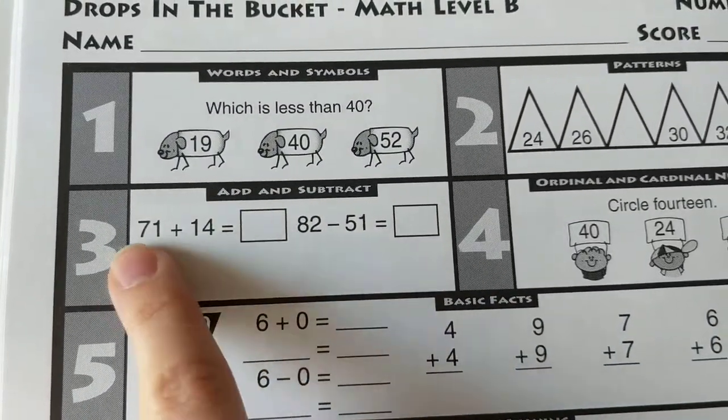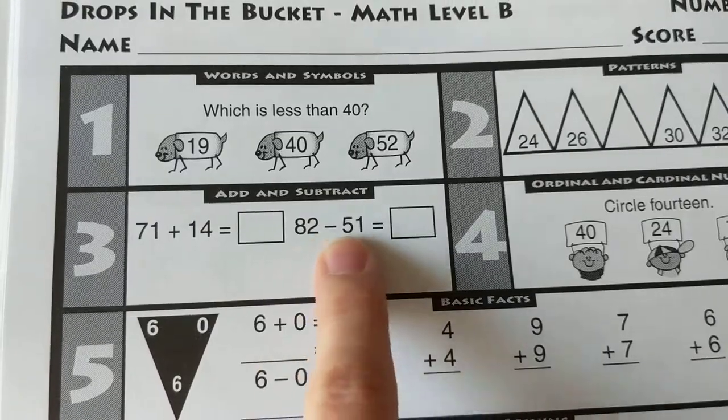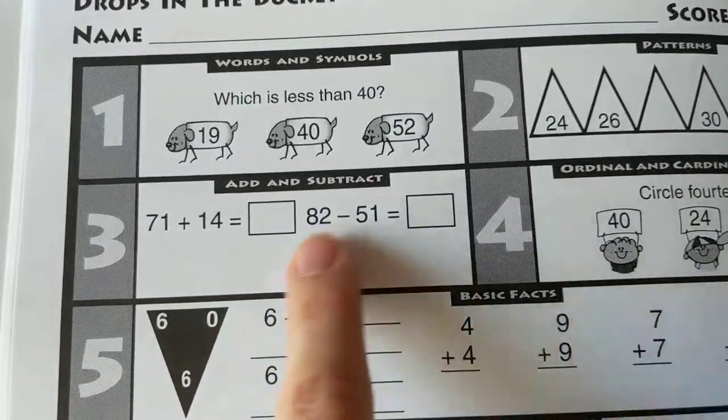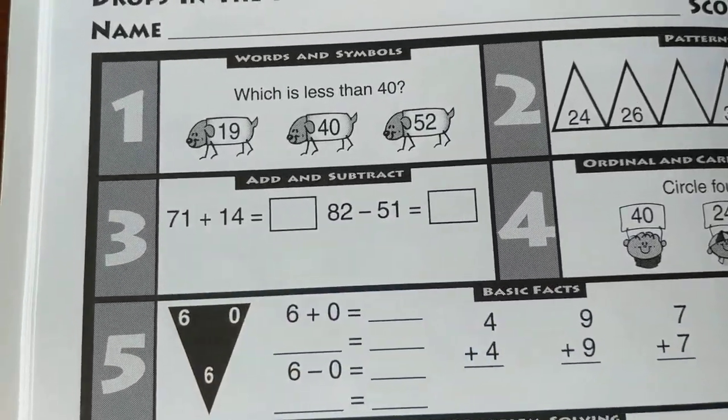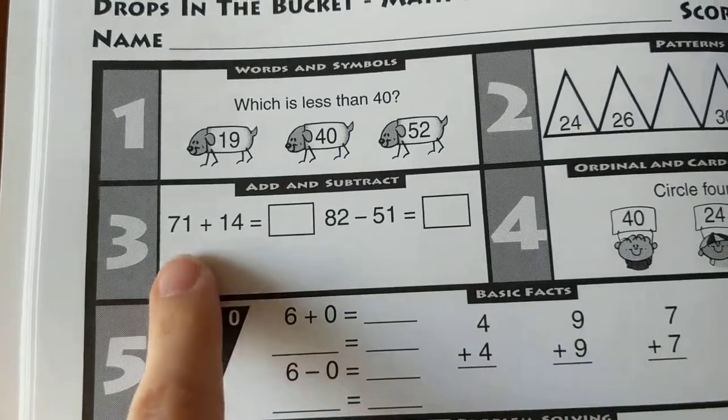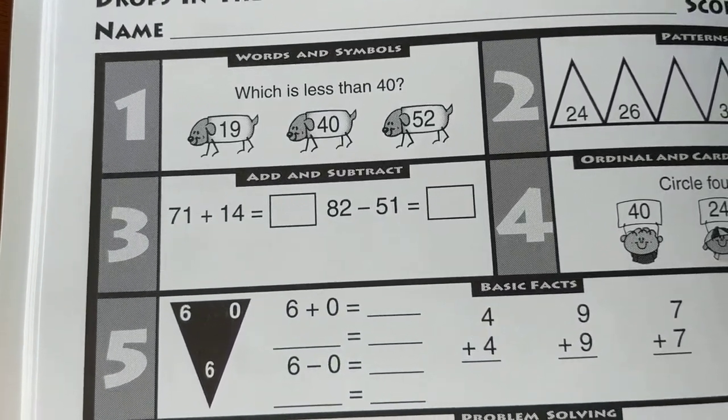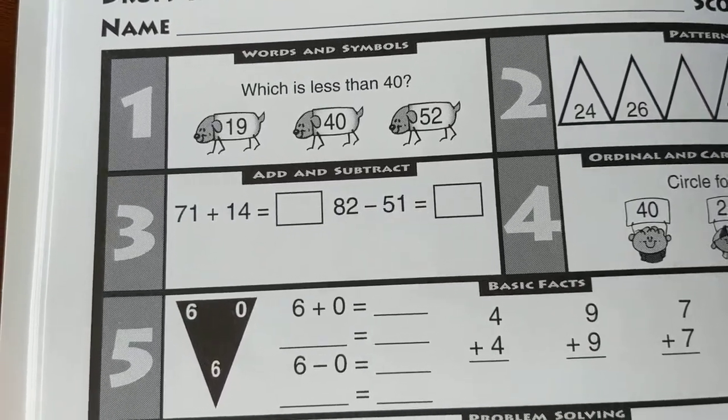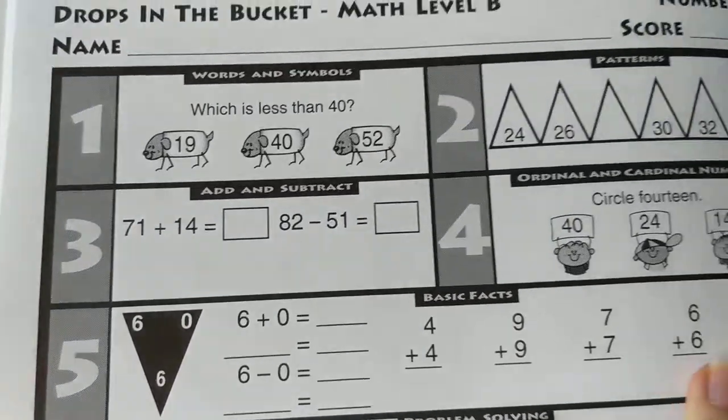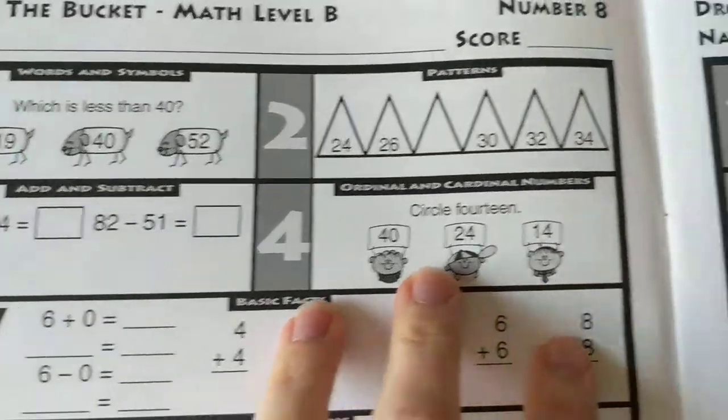Number three, we're adding those numbers together and subtracting those numbers. If this is hard for you, you can take another piece of paper or a whiteboard and you can stack them on top of each other. So put 71 on top and then put 14 underneath and then add up and down. You can do the same thing for subtracting too.